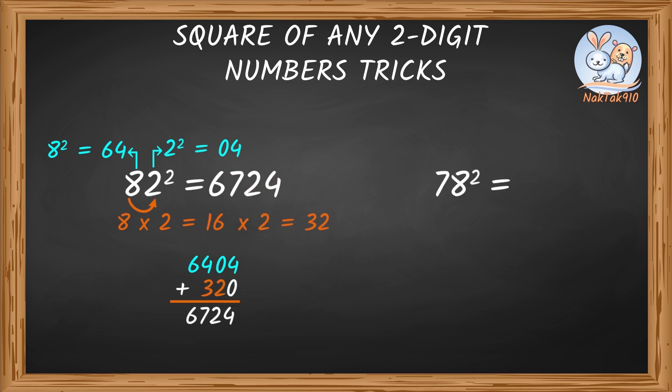78 square. 7 square is 49. 8 square is 64. Add a 0. 7 times 8 is 56. 56 times 2 is 112. Add them is 6,084.